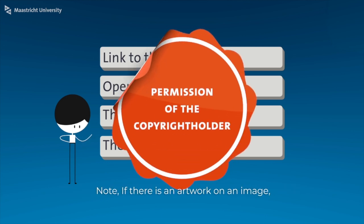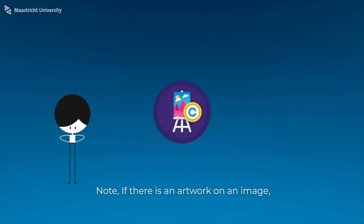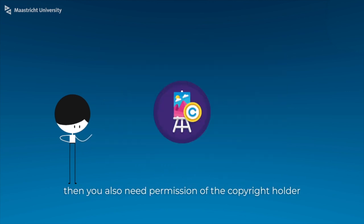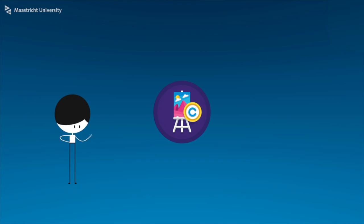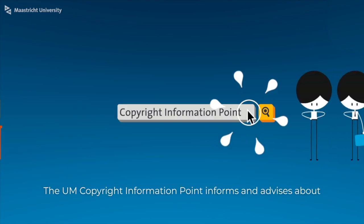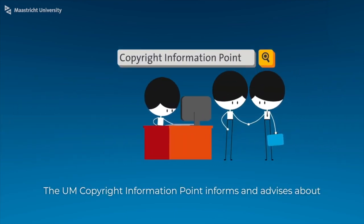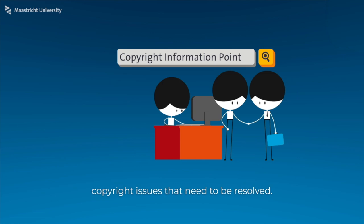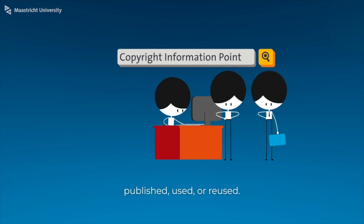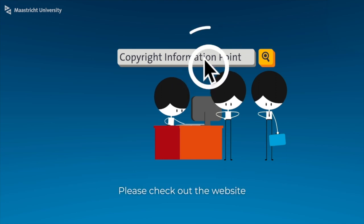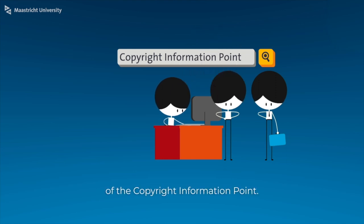Note: if there is an artwork on an image, then you also need permission of the copyright holder of that artwork, with the exception of artworks in the public domain. The Copyright Information Point informs and advises about copyright issues that need to be resolved whenever a publication is written, published, used, or reused. Please check out the website of the Copyright Information Point.